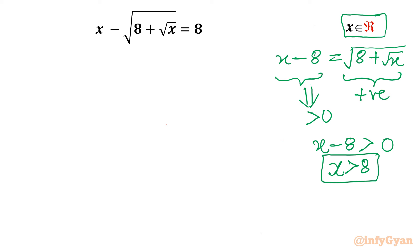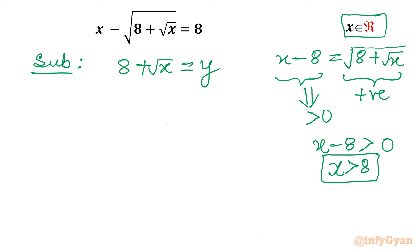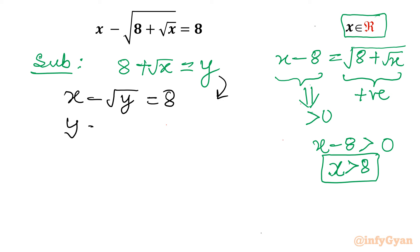Now I will use substitution. Let 8 plus square root x equal to y. See what will happen after that. Our original given equation will become x minus root y equal to 8. And from this equation, if I write y, then y minus root x will become 8.